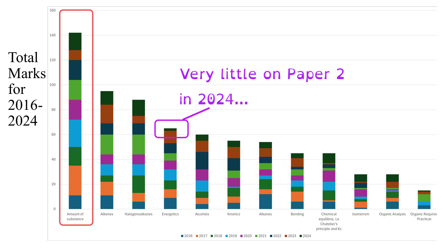And with that in mind we can see that the energetics topic was not assessed very much on the paper in 2024 which makes it slightly more likely that energetics would be a bigger feature on the paper 2 in 2025.